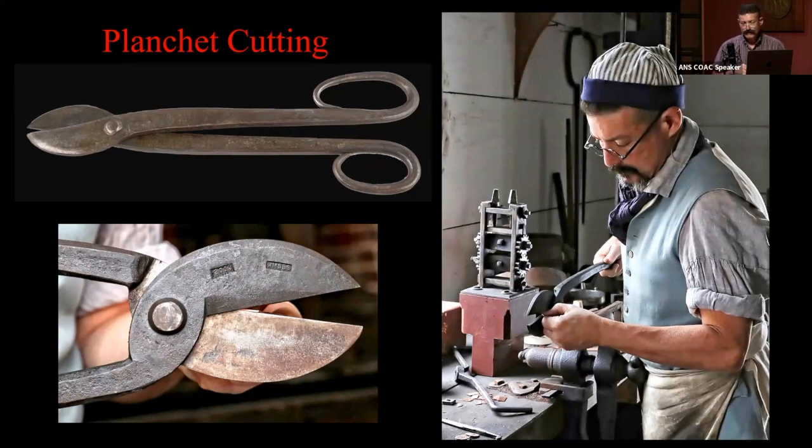Wouldn't it be faster to do it like a cookie cutter with a machine that would punch out a bunch of stones? A blanking press, yeah. Did you try that? No, because I don't see any evidence that any of the large planchet issues were struck on planchets prepared with a blanking press.